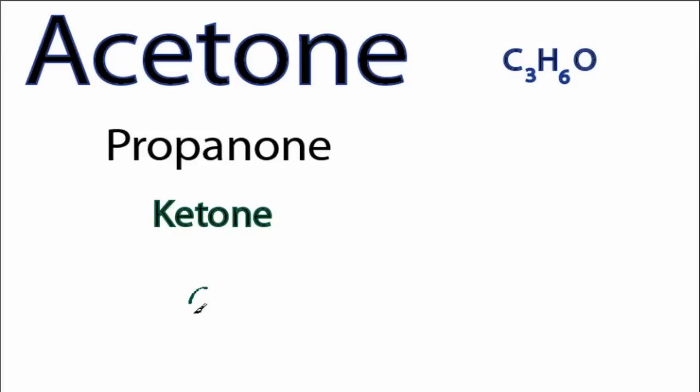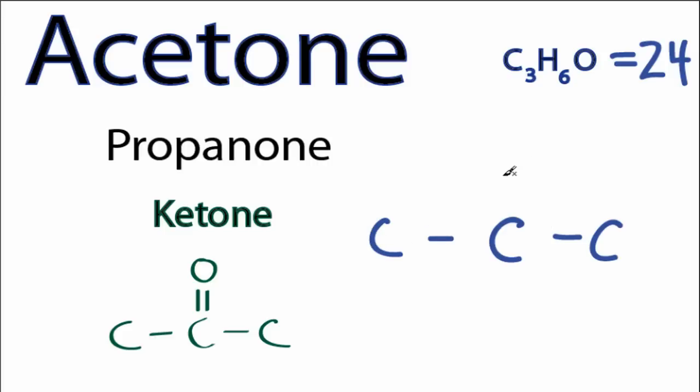And ketones will always be a carbon with a double bonded oxygen and carbons on either side. So by recognizing that, we're almost done with the acetone Lewis structure. We have 24 valence electrons for acetone. We'll put our carbon in the center, and then our carbons on either side with our double bonded oxygen.